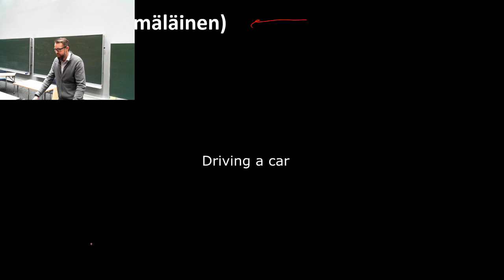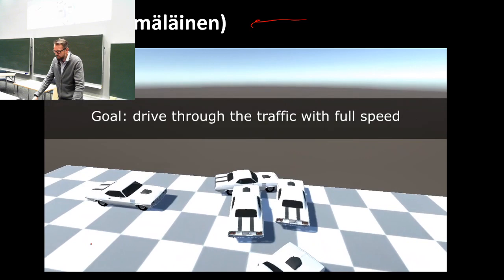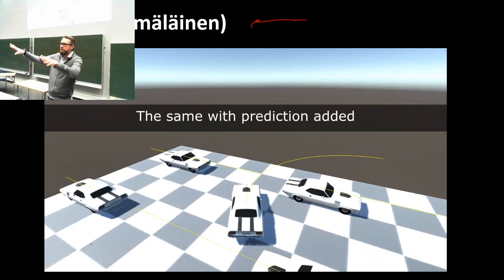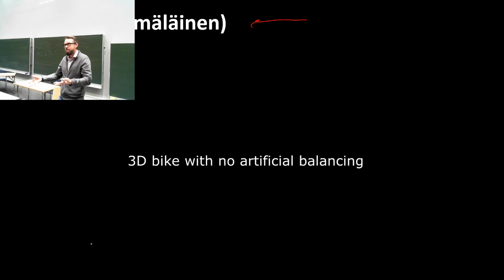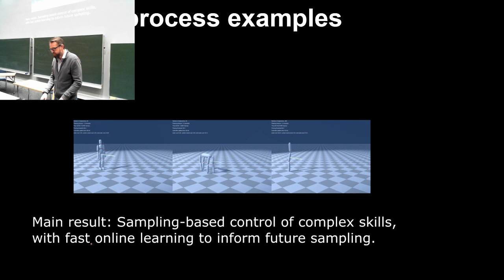Here's another example: you need to cross a road and the traffic is heavy. It's not working out well — several collisions. Now using the ability to predict, you look at motion scenarios, project them into the future, and select the most desired one. You were able to cross safely.